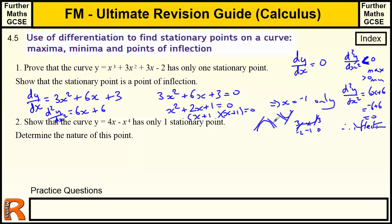Depending on how you've been taught, the second derivative is the easiest method — just differentiate the function again and substitute the value. Or you can analyse the gradients going in and coming out to determine what sort of stationary point it is.